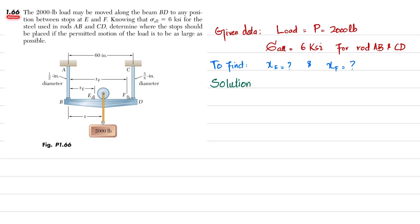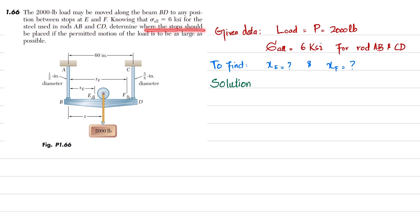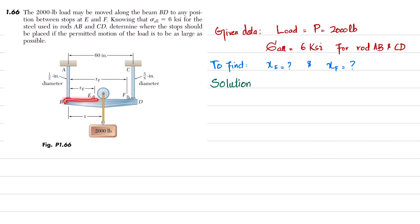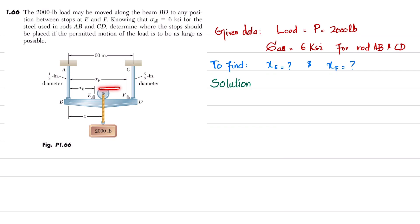Welcome back, problem 1.66. The statement is: the 2000 pound load may be moved along the beam BD to any position between stop E and F. Knowing that the allowable stress is 6 KSI for steel rods AB and CD, determine where the stops should be placed if the permitted motion of the load is to be as large as possible. You can see this is the beam BD with a 2000 pound load acting between stops E and F, and you have to find the stop positions at distances x_E and x_F so that the load can move as far as possible.